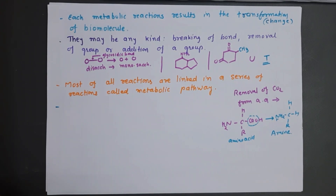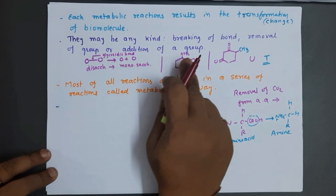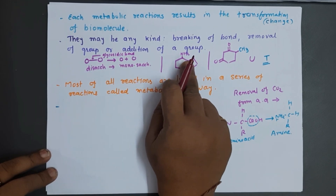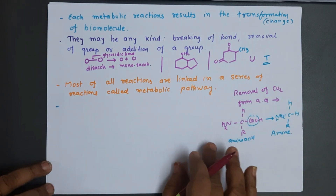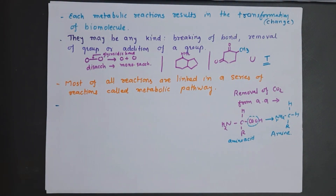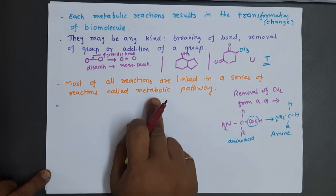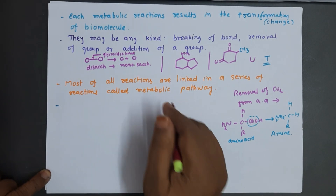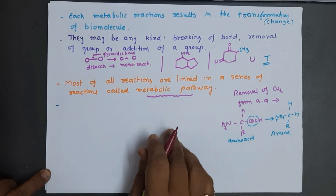So metabolic reactions may be of any type — breaking of bond, removal of any group, or addition of group. Now remember that most of these reactions are linked in a series of reactions, and they are known as a metabolic pathway.